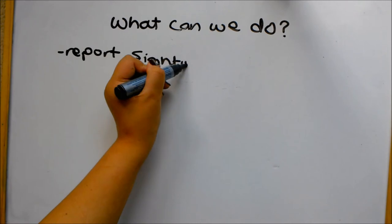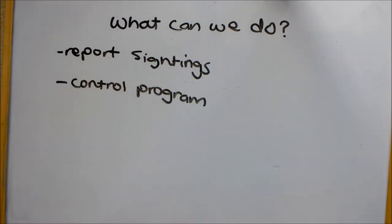If you see crown of thorn sea stars, you can report them on the Eye of the Reef app from the Great Barrier Reef Marine Park Authority, or you can become part of a control program. By doing these, we can help control the crown of thorns numbers.